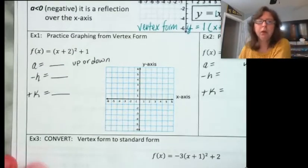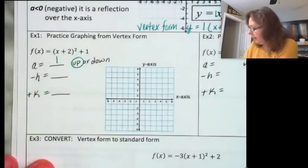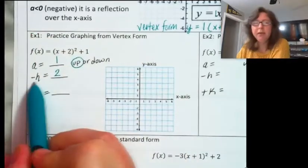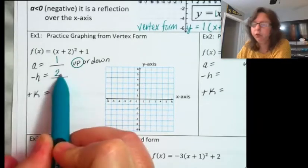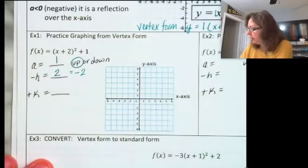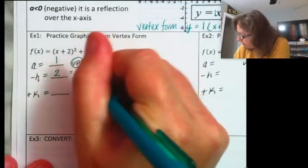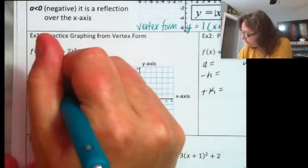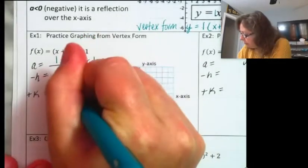Looking at this first example, the a value is 1, so this is going to go up. The h value: negative h equals 2, so I divide both sides by negative 1, and this is going to be a horizontal shift to the left 2. And then my k value is a positive 1, so this is going to be a vertical shift of up 1.